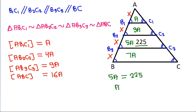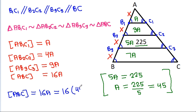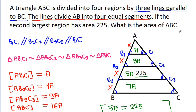So A will be 225 divided by 5, that is 45. So area of ABC equals 16A, which is 16 times 45, and that equals 720.